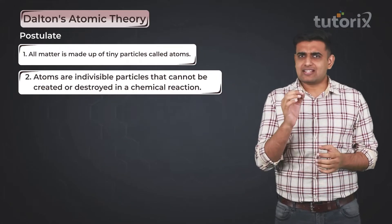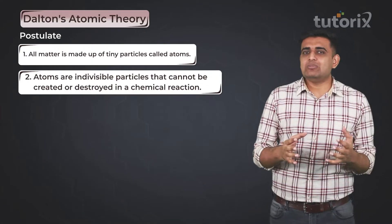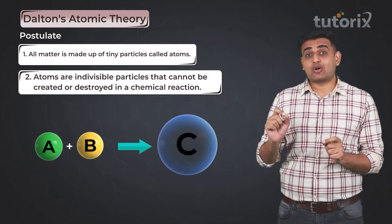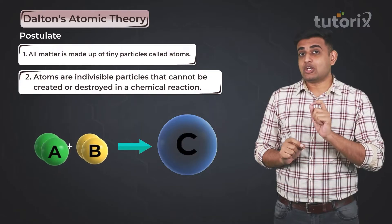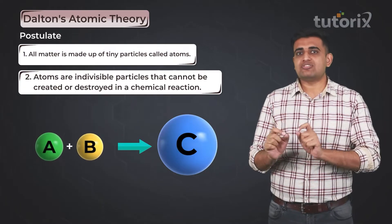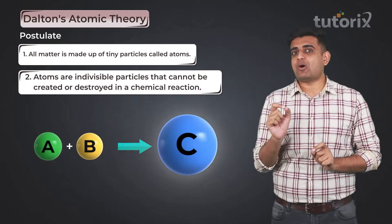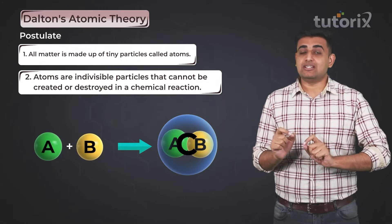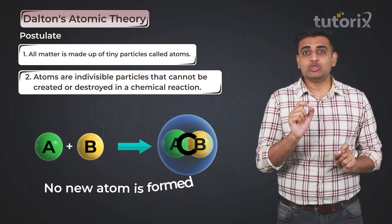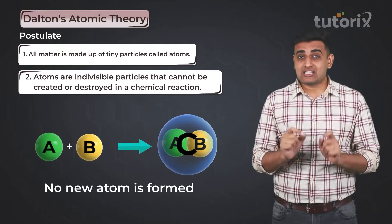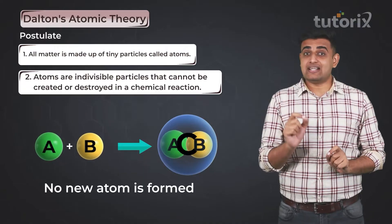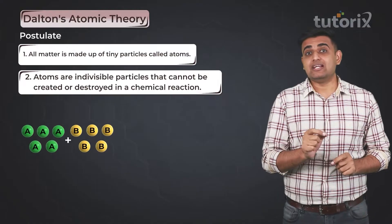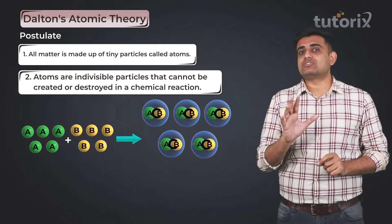For example, suppose element A reacts with element B to form compound C. According to the second postulate, no new atom is formed during the formation of compound C, because compound C is formed by the combination of atoms of A and B. So during this chemical reaction, no new atom is formed and the existing ones are not destroyed. If five atoms of element A react with five atoms of element B, it forms five units of compound C.